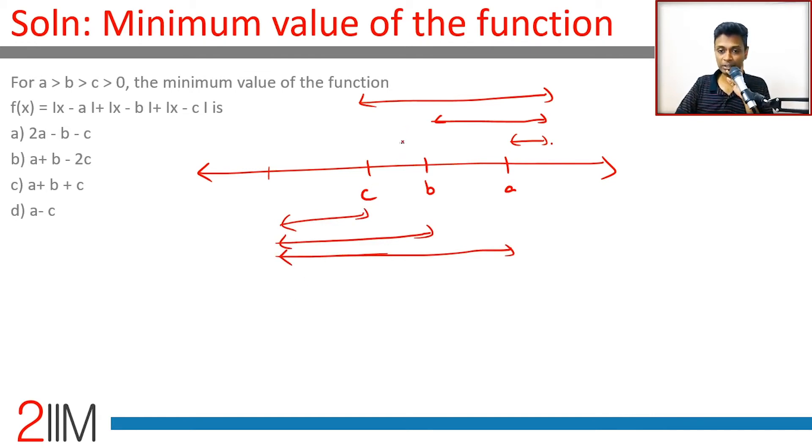If you put x in between here somewhere, then this will be |x - c|, this will be |x - b|, |x - a|. Straight away you can sense that bang in the middle is where we need to be. This distance plus this distance plus this distance is going to be a - c, and